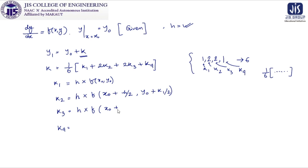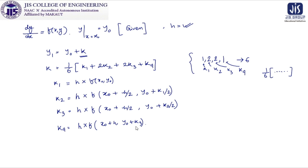Similarly, K3 = H · F(X0 + H/2, Y0 + K2/2), so it is clear that until we have calculated K2, it is not possible to calculate K3. Finally, K4 = H · F(X0 + H, Y0 + K3). In this final case as well, it is not possible to find K4 until the value of K3 is known.